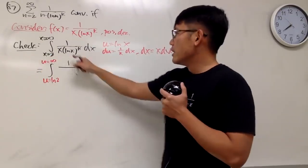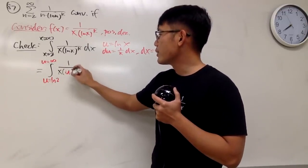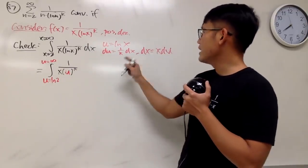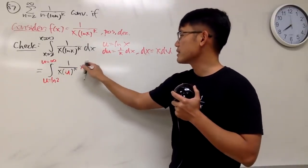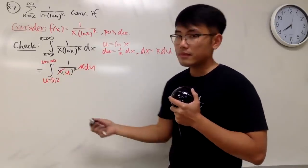And then, here we have the x, parentheses, u, k is still k, and this guy is x du. So let me just put on x du. So cancel this out, right?